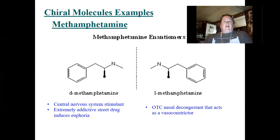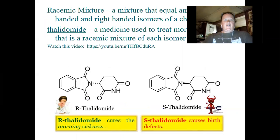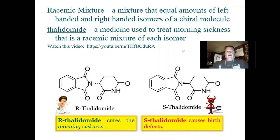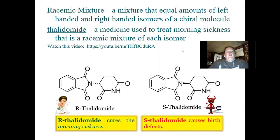Another example is thalidomide. There's a term when talking about chiral compounds: if you have a mixture that is equal amounts of the left-handed and the right-handed isomers, it's called a racemic mixture.